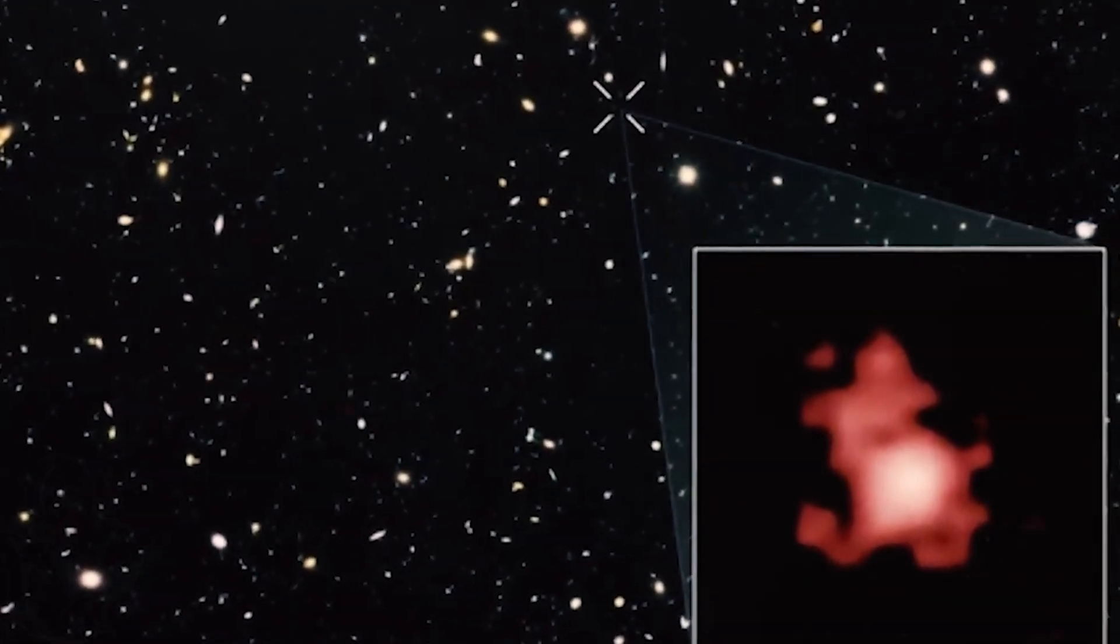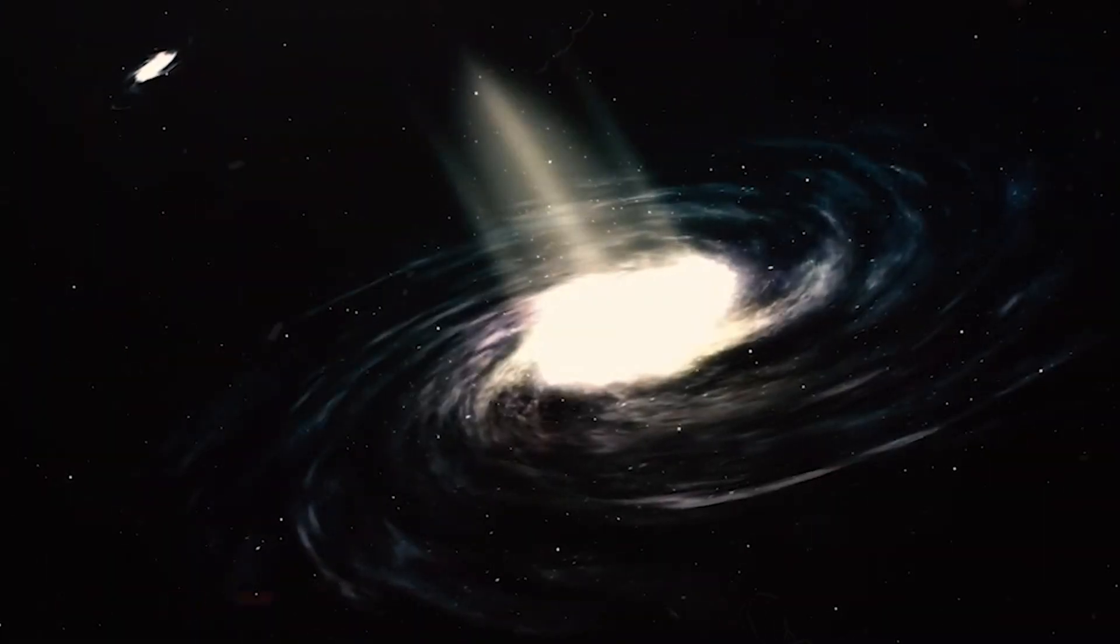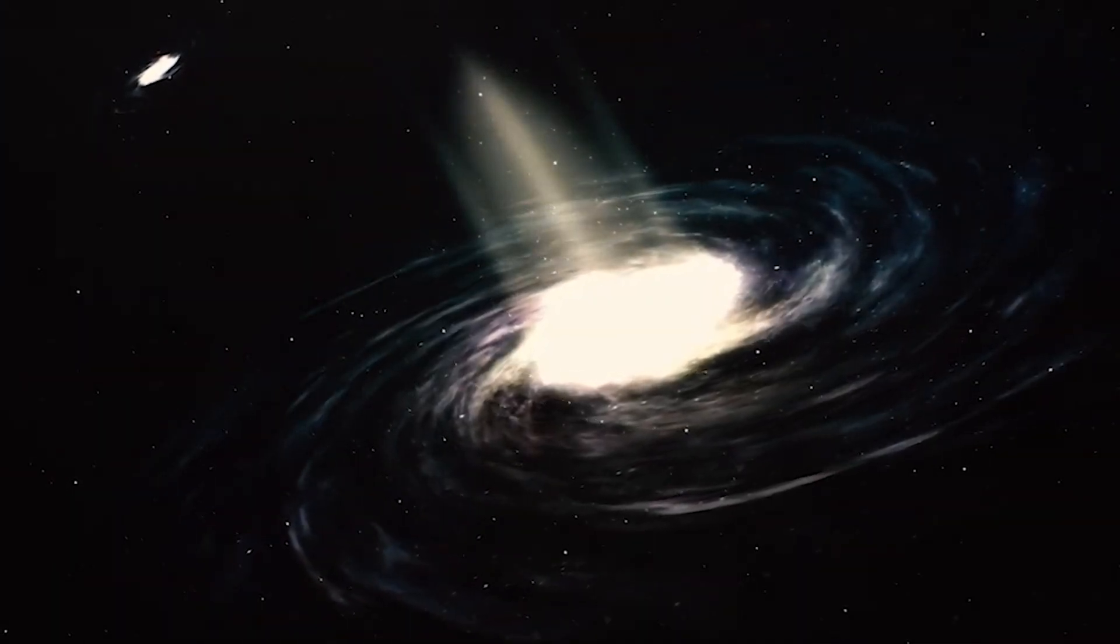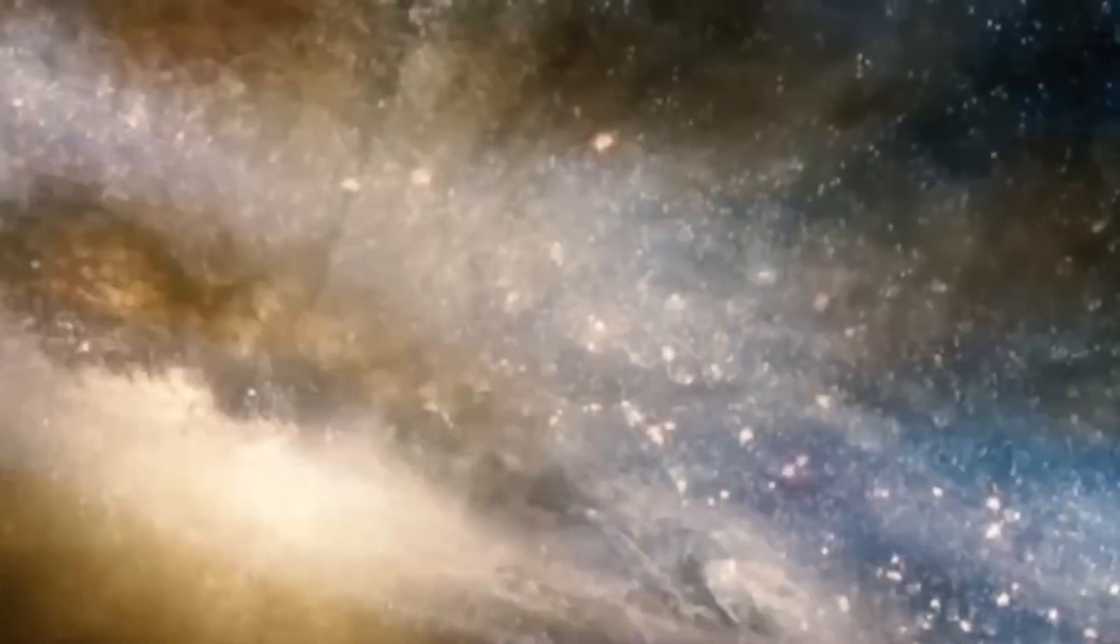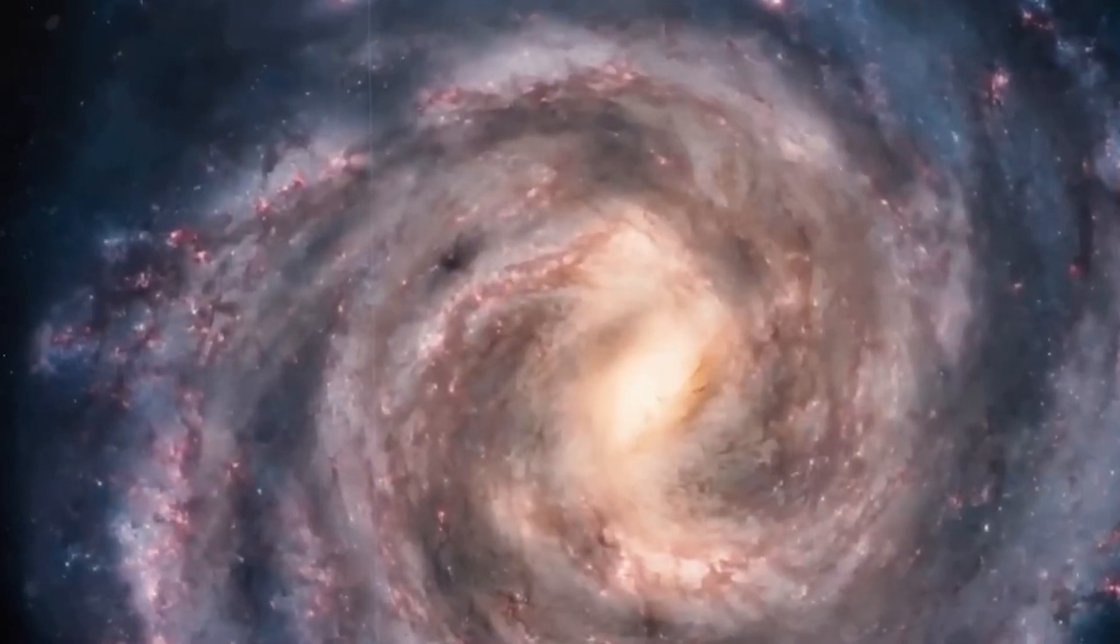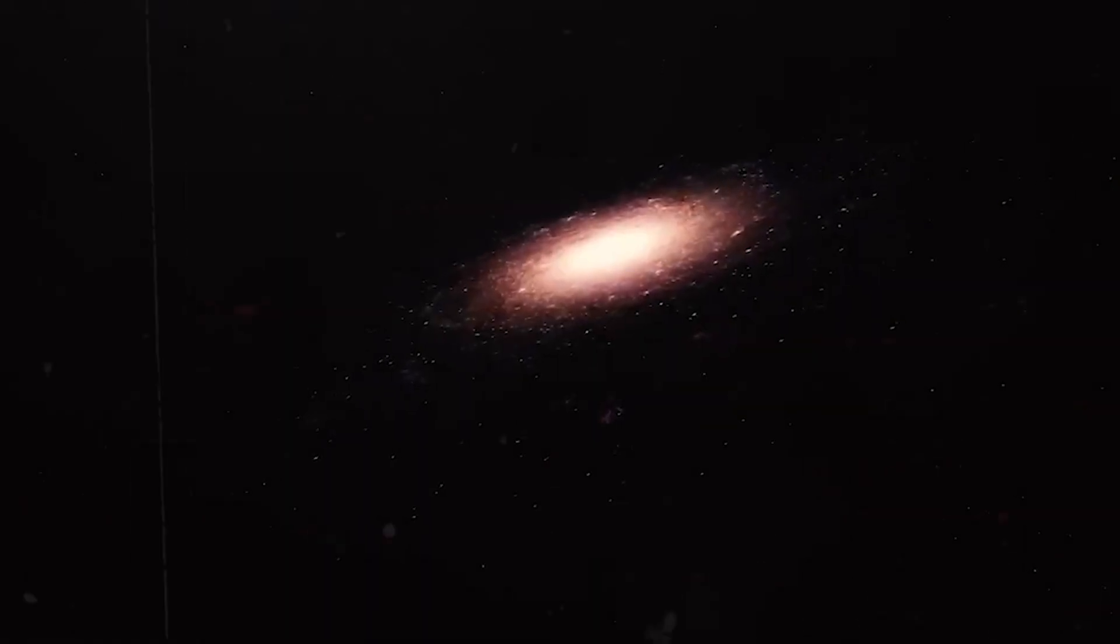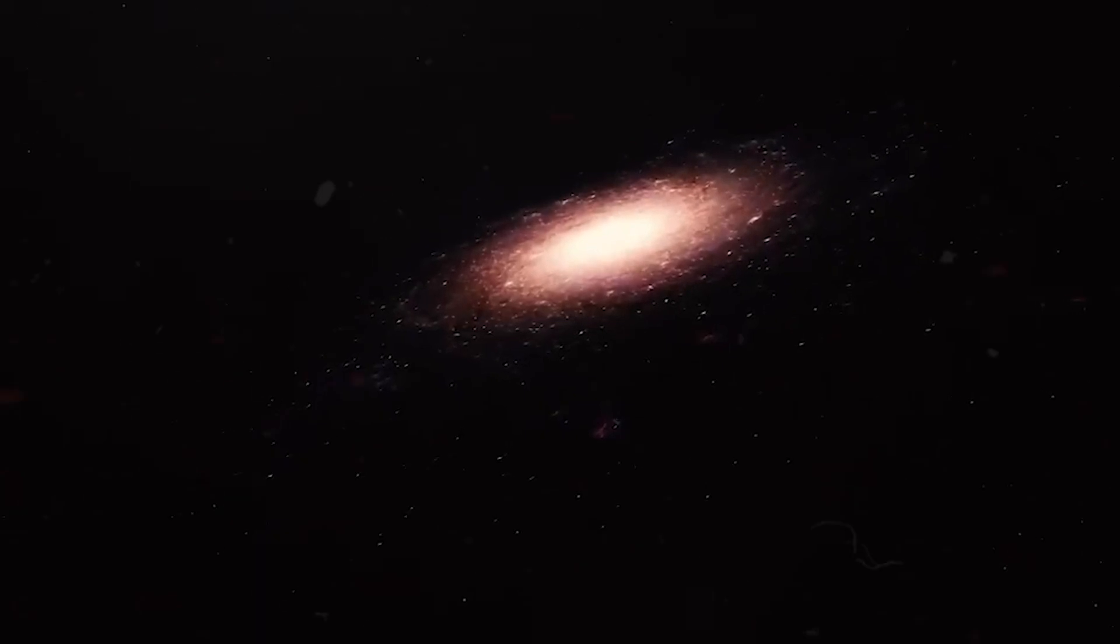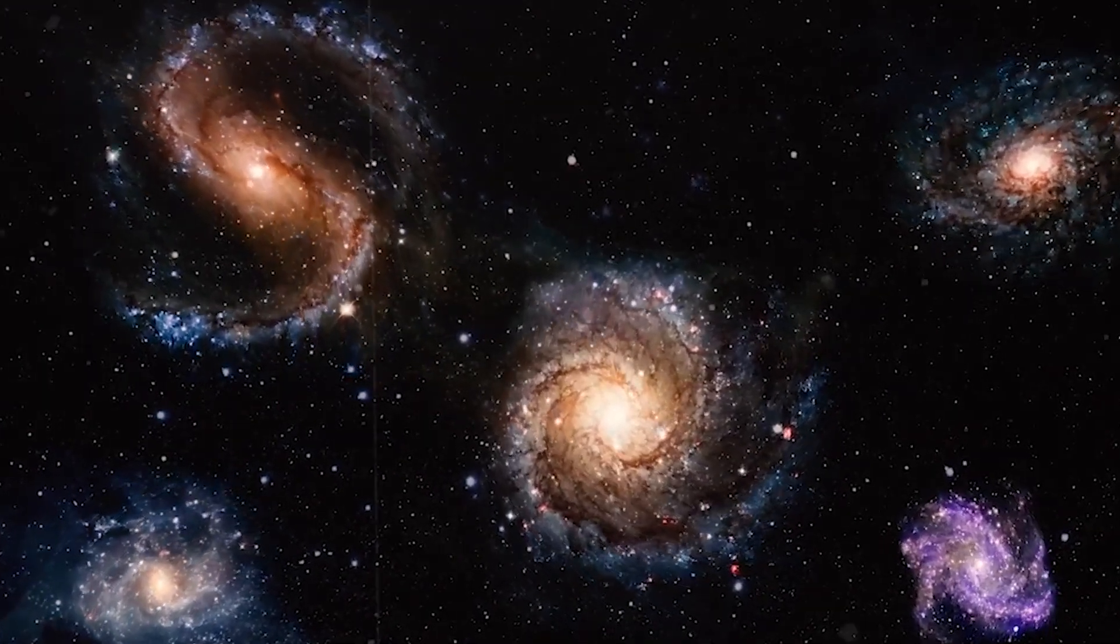The galaxy, GNZ 11, is very small and compact, with a diameter of only 3,000 light years. However, it is also very bright and active, forming stars at a rate of 20 solar masses per year, compared to one solar mass per year for our Milky Way. It could be one of the first galaxies to form in the universe and could represent the building blocks of larger galaxies that we see today.